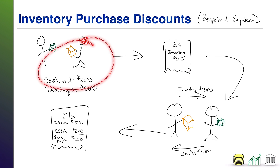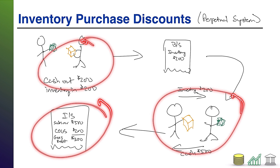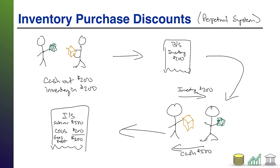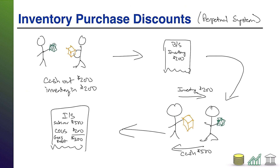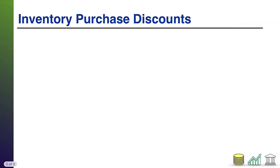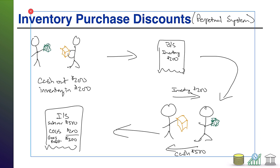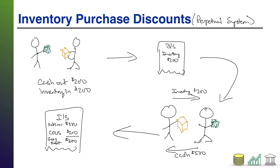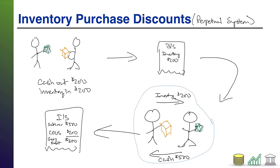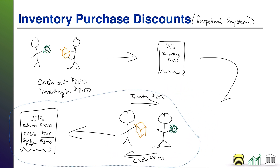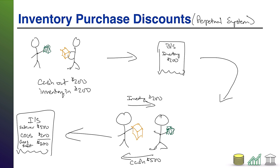That gross profit, filtered down to the end of the income statement, is factored into net income. So this is how things work without a discount — we pay a certain amount, mark it up, charge the customer even more, and the difference becomes our gross profit. Now I'm going to copy all these graphics to the next page and show you what happens when we factor in a discount upon purchasing the inventory.